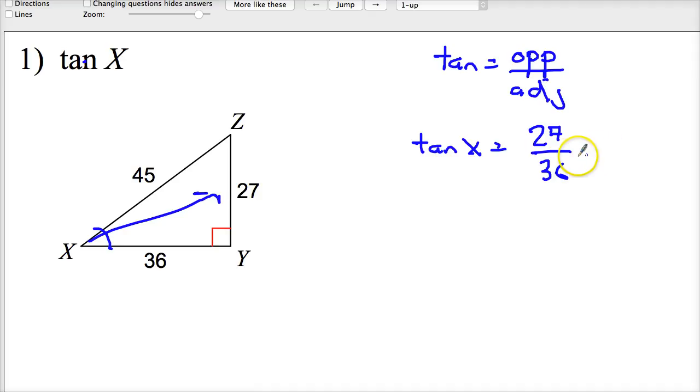And you're often asked to reduce it. Sometimes they even want the decimal version. 9 goes into 27 three times, 9 goes into 36 four times. So, three-fourths is that ratio.